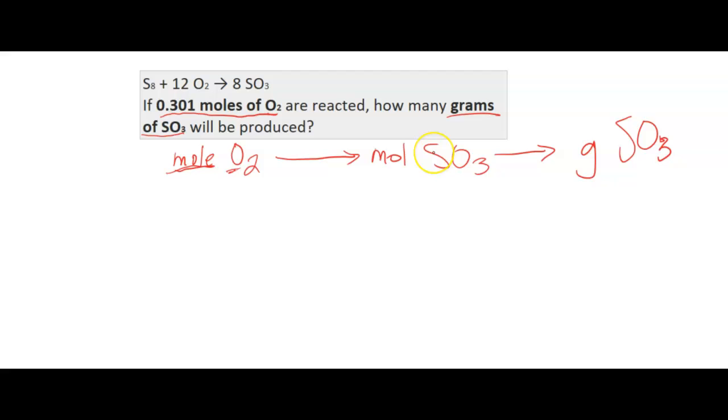To get from moles of O2 to moles of SO3, we're going to have to use our balanced equation, which has been given to you here. So that's convenient enough. So for the second step, we're going to have to use the molar mass. And notice we're going from SO3 to SO3, so we're going to have to use the molar mass of SO3. We want to make sure things match.